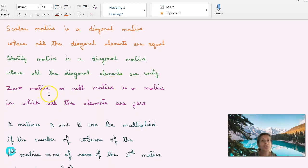What is a zero matrix? A zero matrix or null matrix is a matrix in which all the elements are zero.